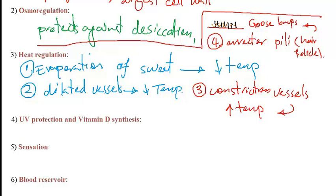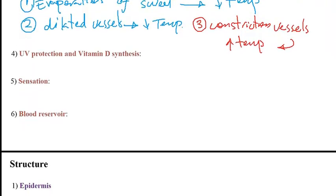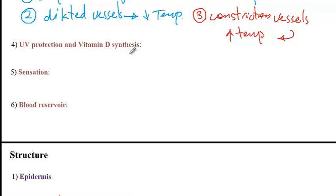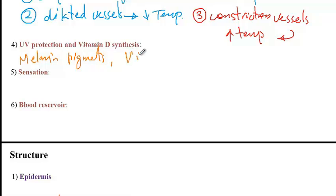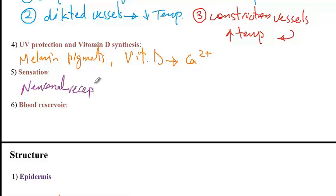The next function of the skin system is to provide protection against UV light and to help with vitamin D synthesis. Melanin pigments in our skin absorb UV light and prevent it from reaching deeper organs. Inside the skin, cholesterol is also converted into vitamin D, which helps with absorption of calcium.